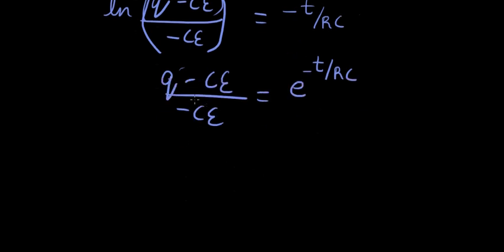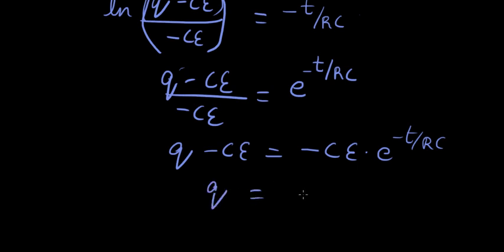And now we can take the ce this side. What do we get? q minus ce equals ce times e power minus t over rc. Now take this ce that side.